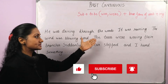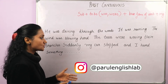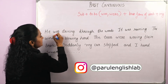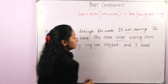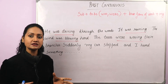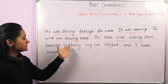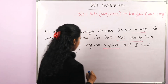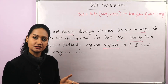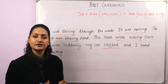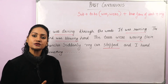In stories, we use past continuous to set up a scene: 'He was driving through the woods. It was raining. The wind was blowing hard. The trees were waving their branches. Suddenly my car stopped and I heard something.' The opening sentences are in past continuous to establish the scene, and then it moves into simple past. That is what happens when you tell a story.